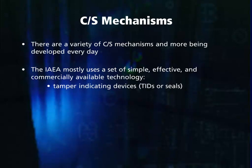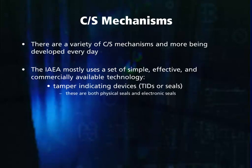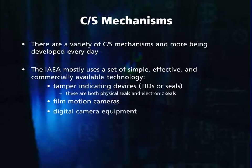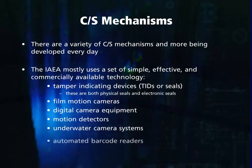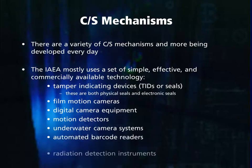These can be both physical seals and electronic seals. Optical surveillance in the form of film motion cameras and digital camera equipment, motion detectors, underwater camera systems, automated barcode readers, and radiation detection instruments.